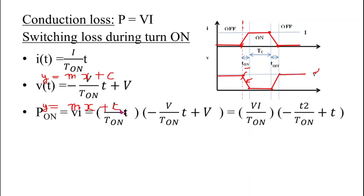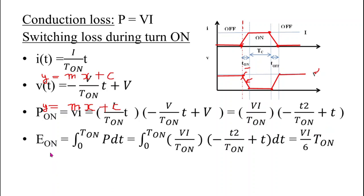To get the power loss during turn-on, we multiply the current and voltage equations. On multiplying, we get: p(t) = (VI / T_on) × (−t² / T_on + t). Energy losses equal the integral from 0 to T_on of p dt. We take 0 to T_on because we use the red dotted line as the reference axis. On integration, energy losses during turn-on equals VI by 6, multiplied by T_on.